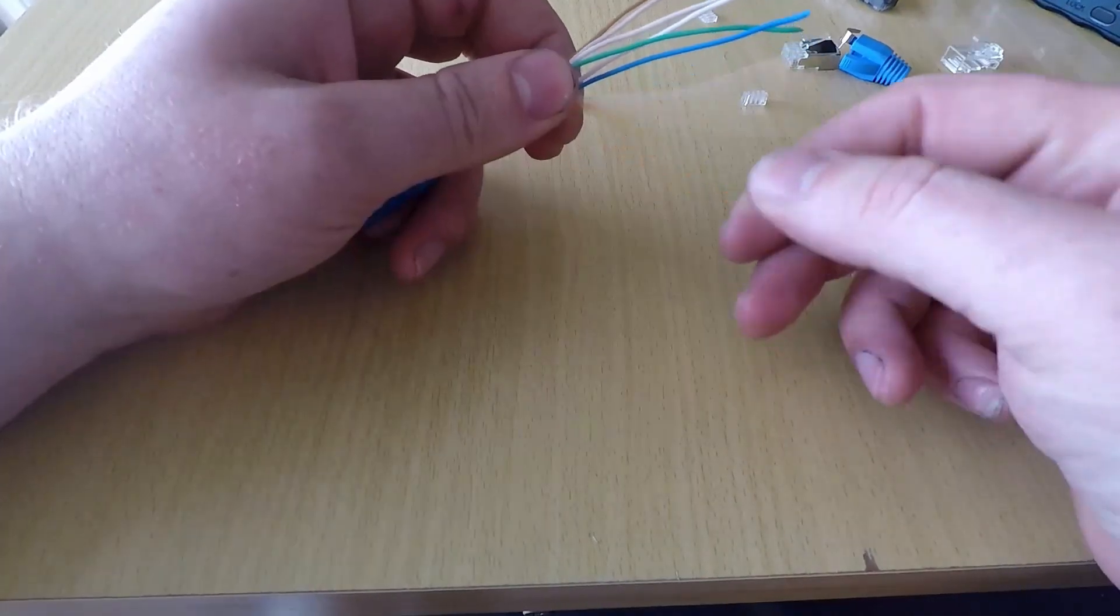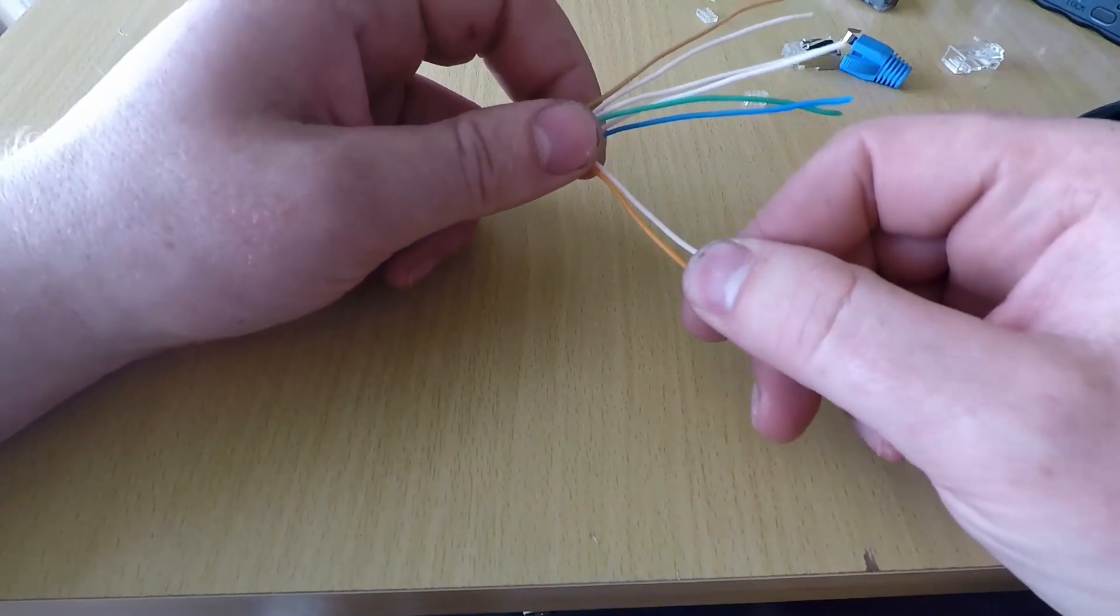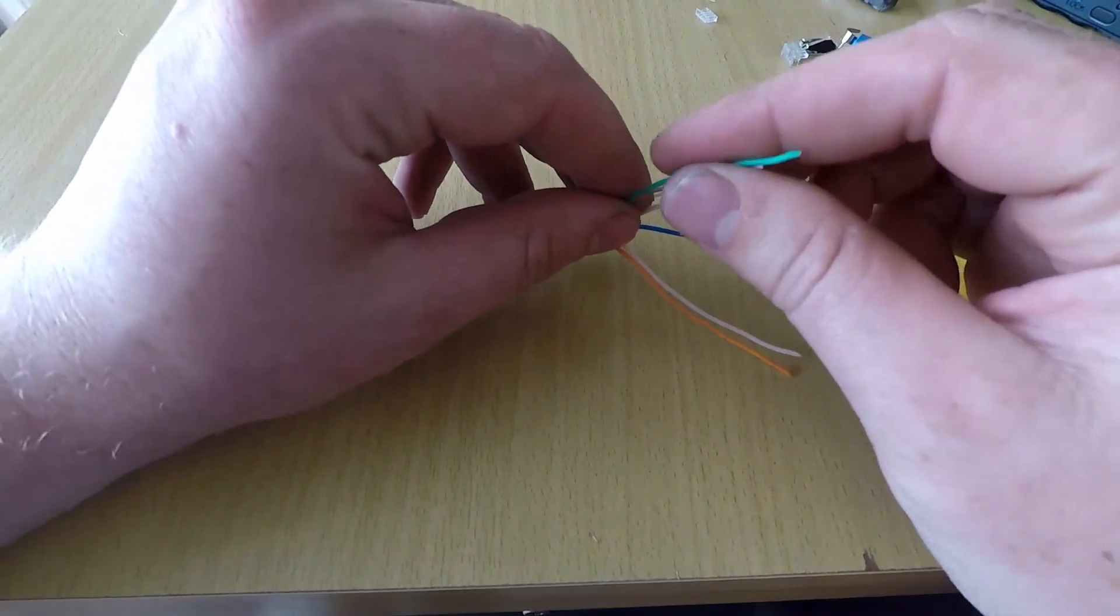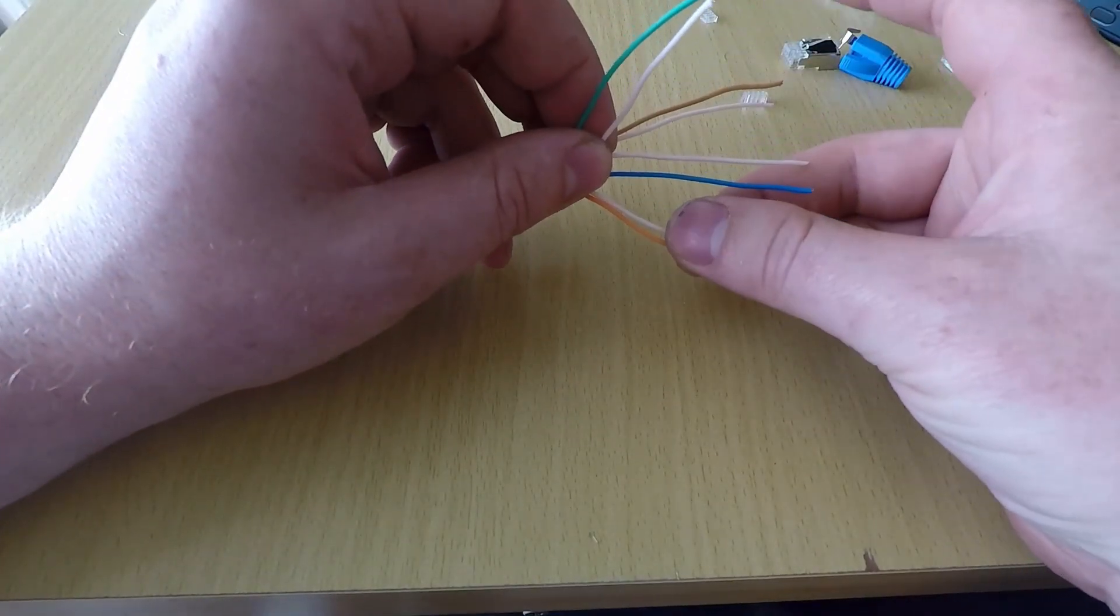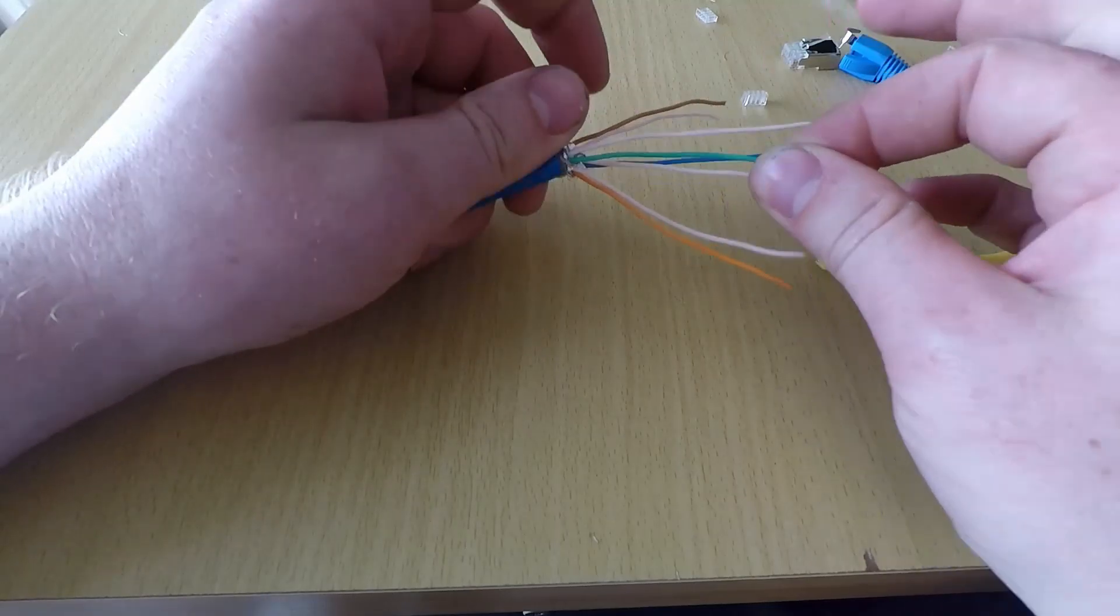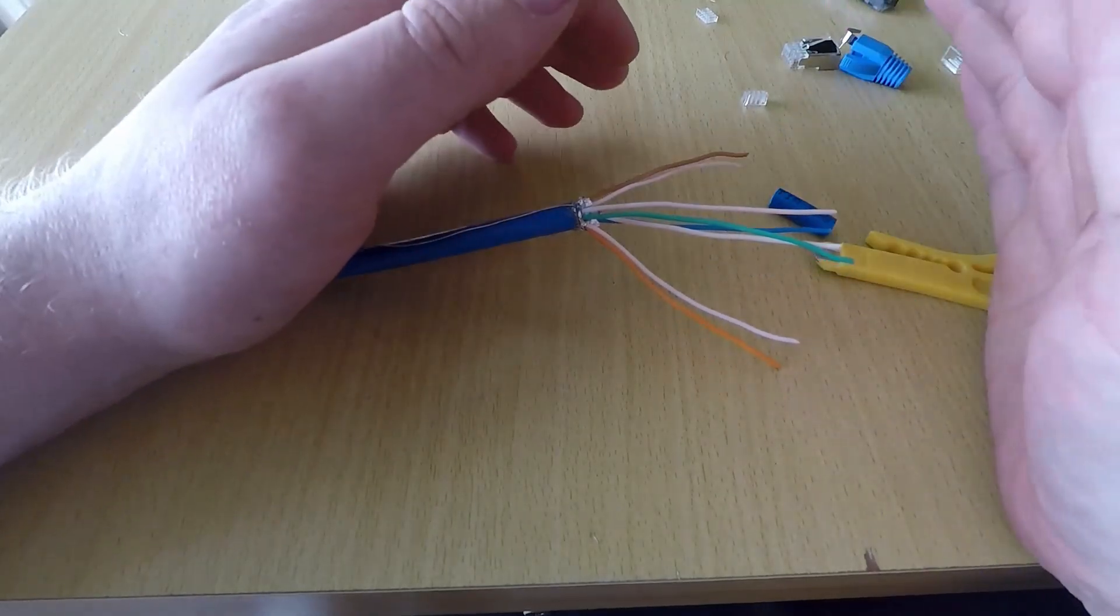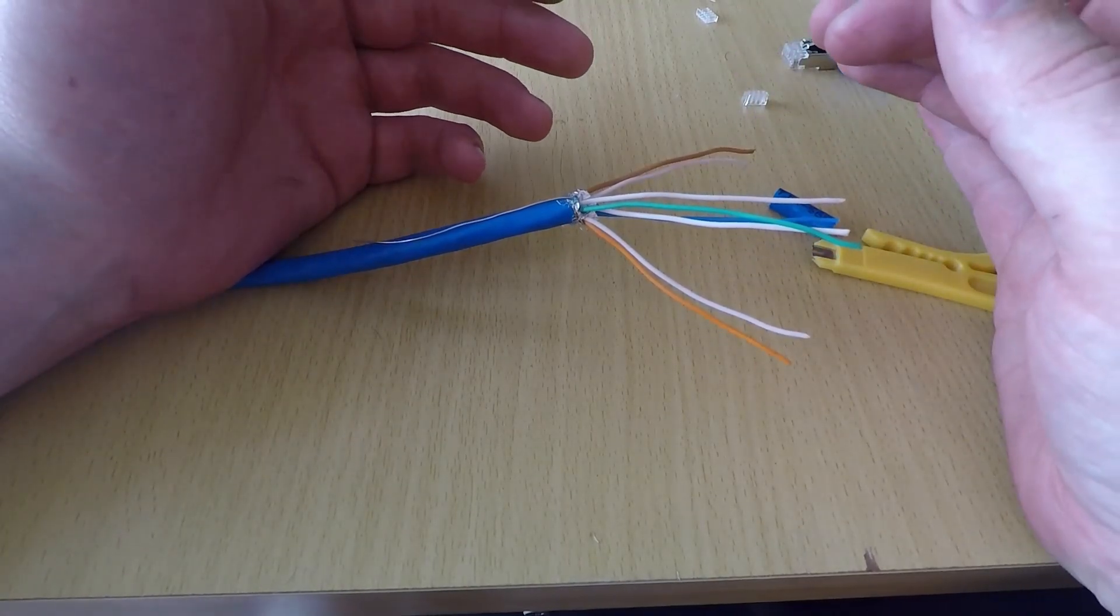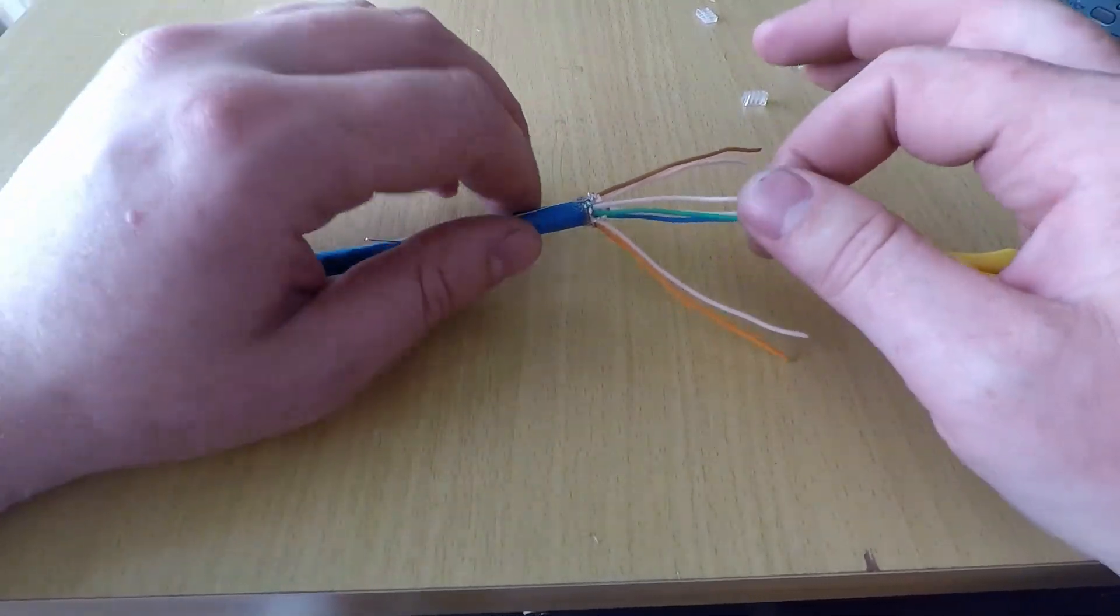For type B, we're going to keep the two orange cores together and split the greens. Type A, you would do the opposite. You keep the greens together and split the oranges. Make sure you save a Google image of whichever type you're going to do your house to, if you're new to this. If you've done it for a while, then you probably already know it off by heart.